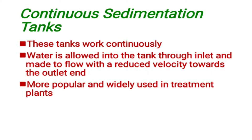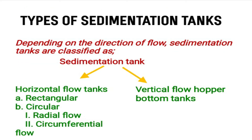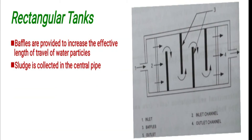Depending on the direction of flow, sedimentation tanks are classified as horizontal flow tanks and vertical flow hopper bottom tanks. Horizontal flow type tanks — the first type is rectangular tanks.